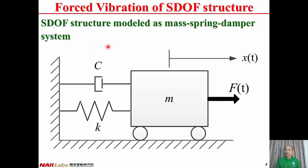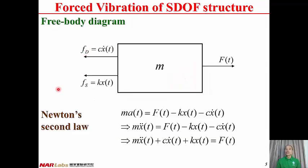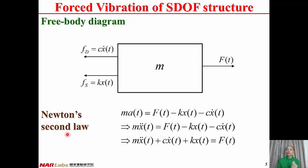A single degree of freedom structure can be modeled as a mass, spring, and damper system, where F(t) is the external force applied to the structure. Here is the free body diagram of a single degree of freedom under external forces. F(t) is the external force. Fd(t) is the damping force, directly proportional to velocity. Fs is the restoring force, directly proportional to displacement.